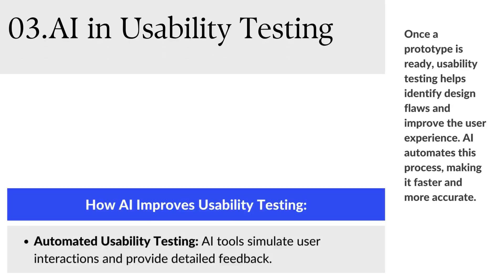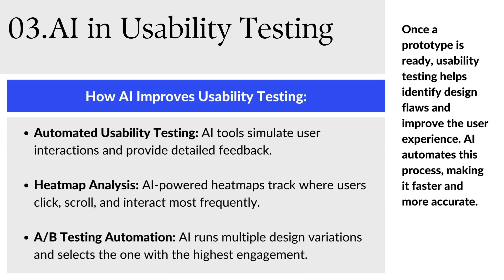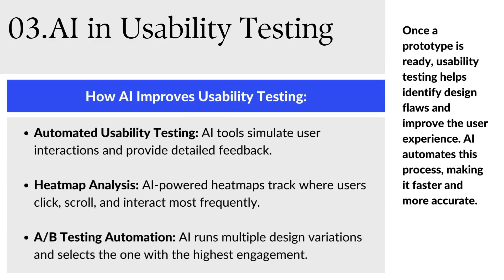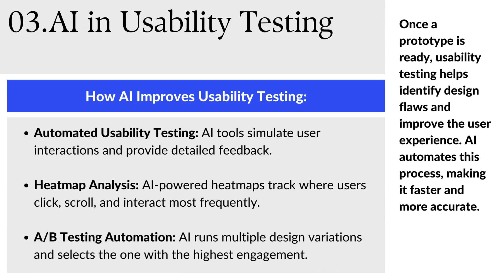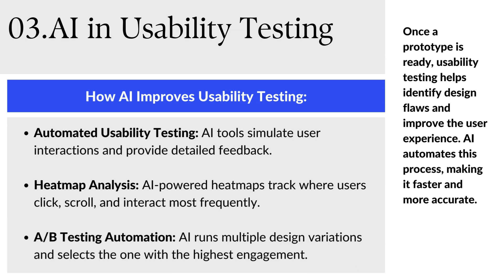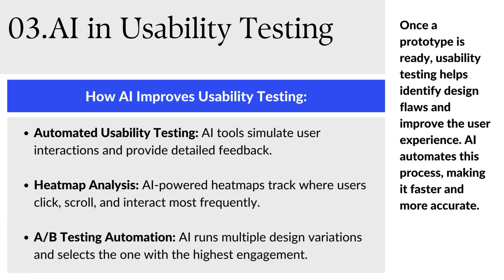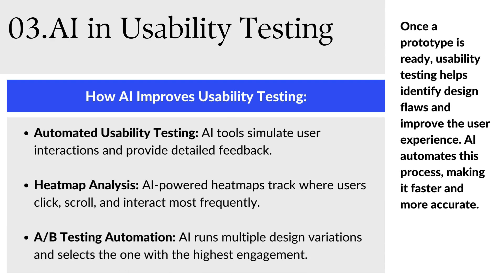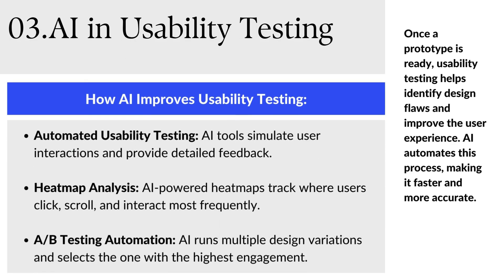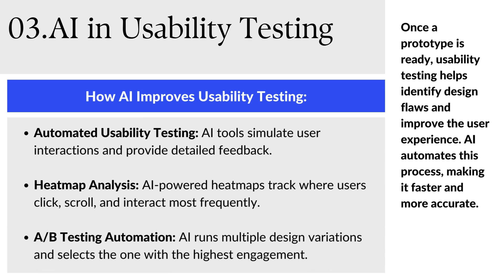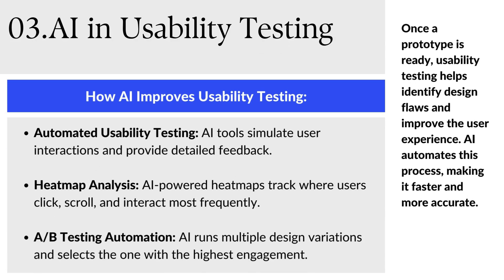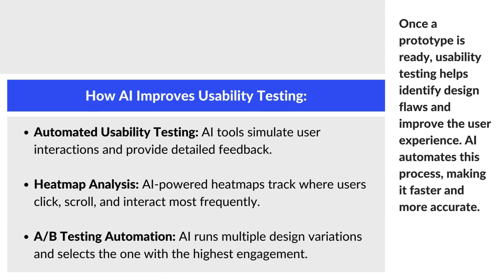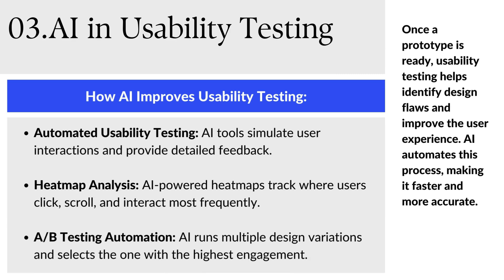First we have automated usability testing, where AI tools simulate user interactions and provide detailed feedback. Next is heat map analysis, where AI-powered heat maps track where users click, scroll, and interact most frequently. Then there is A/B testing automation, where AI runs multiple design variations and selects the one with the highest engagement.